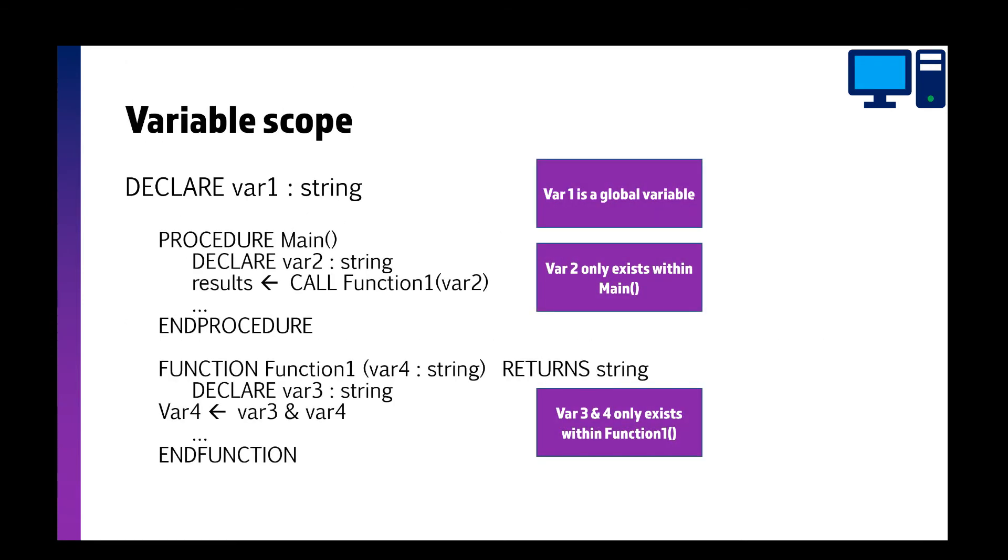So here we've got two little subroutines. We've got a procedure and a function. So you see, we've got var1 right at the top is declared, which is a global variable. So we can use that in function 1 or main. But var2 only exists within main and var3 and 4 only exist within function 1.